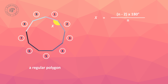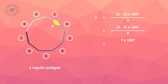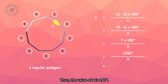So, 9 minus 2 times 180 over 9 equals 7 times 180 over 9, or 1260 over 9. Thus, the value of x is 140 degrees.